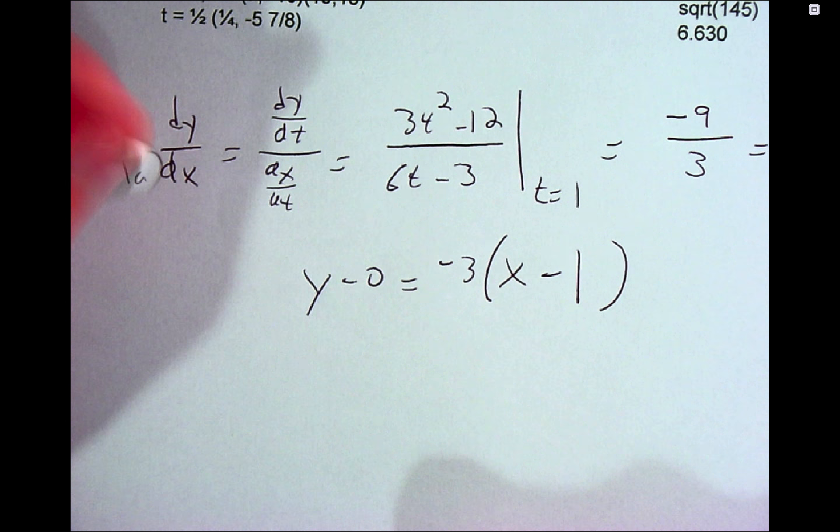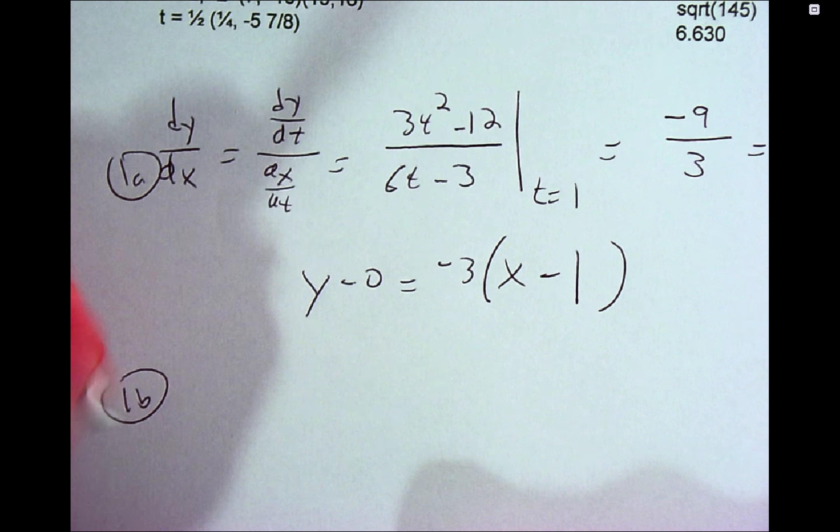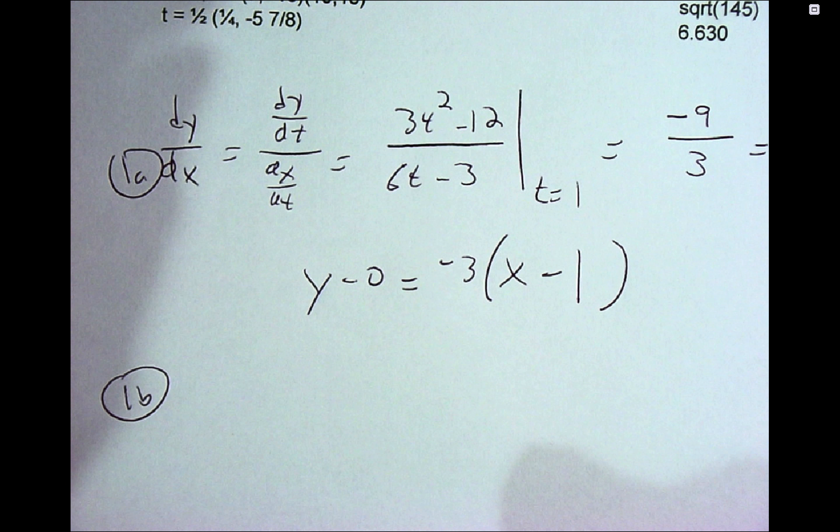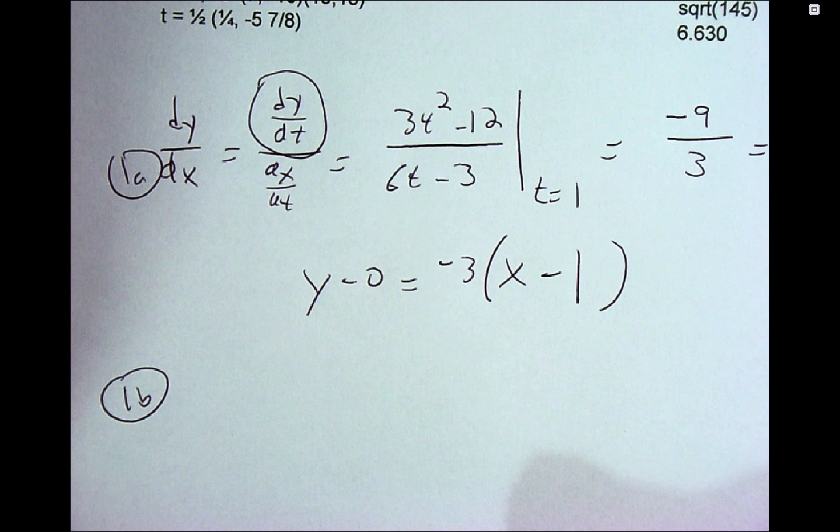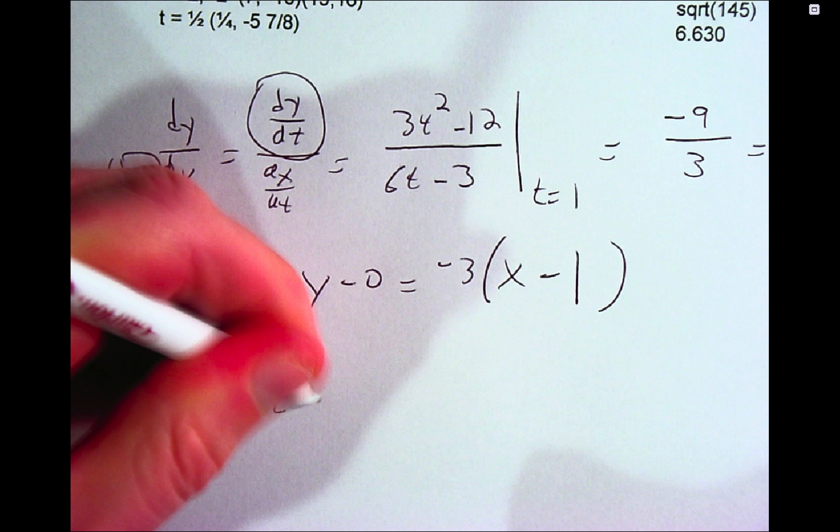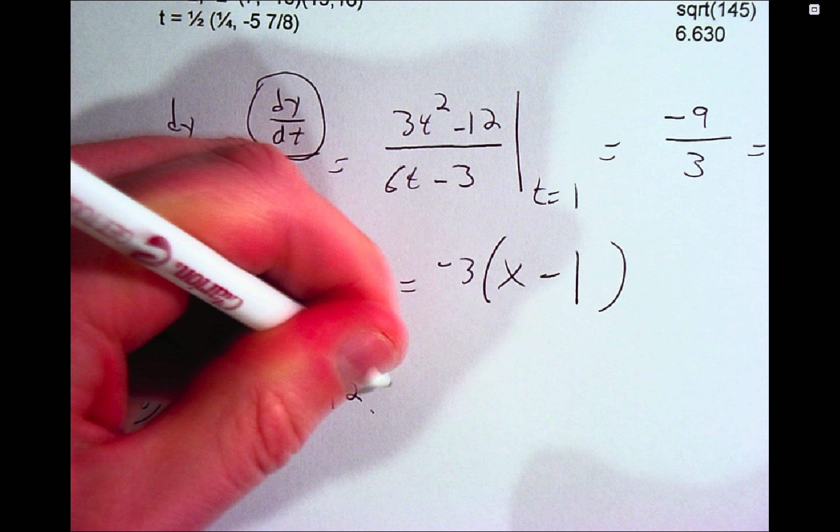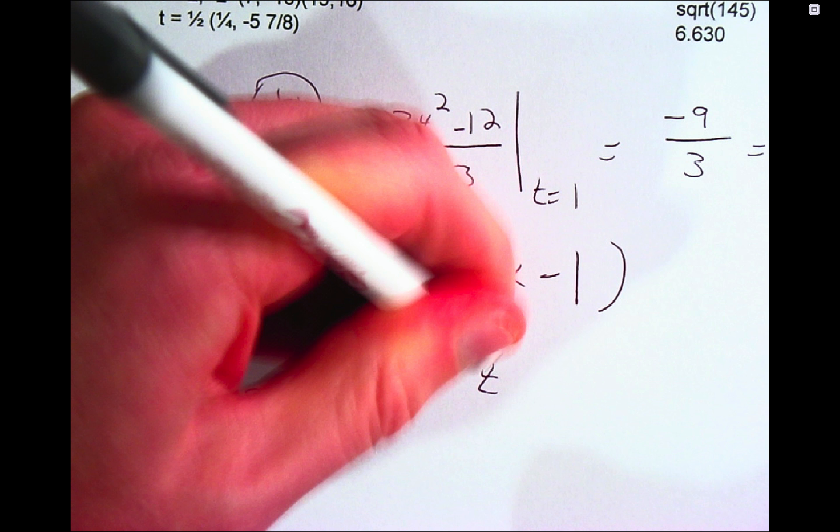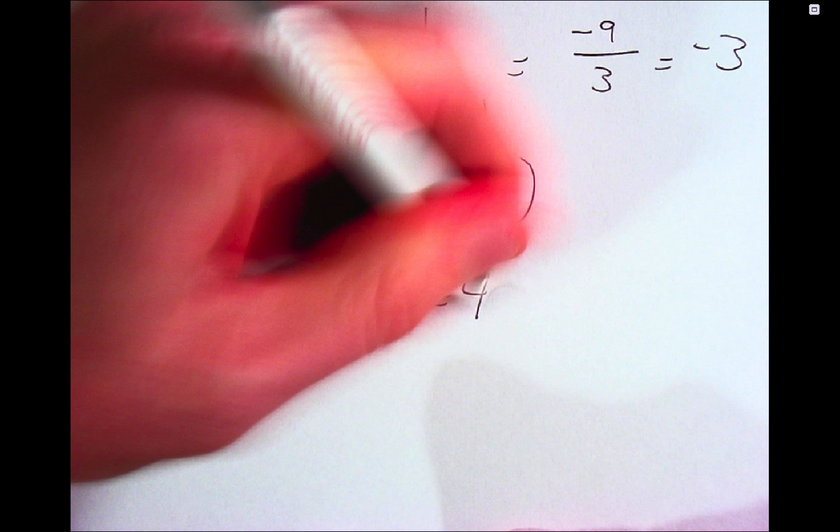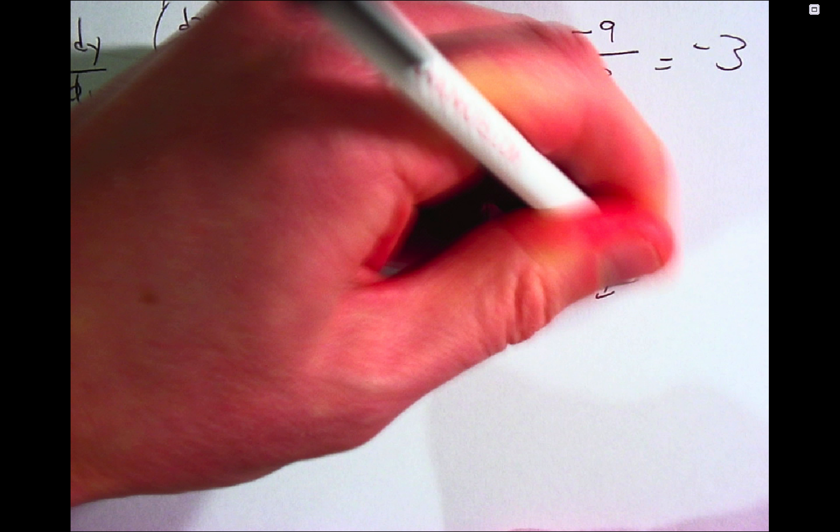1b, find where the tangent line is horizontal. Things are horizontal when their slope is 0, fractions are 0 when the numerator is 0. So we want to know when 3t squared minus 12 equals 0, which becomes t squared equals 4. So t equals plus or minus 2. Now, you do have to be careful and make sure the bottom is not 0 at the same time,